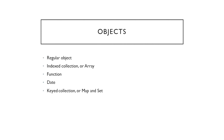In JavaScript, the object has various subtypes but they're still an object under the hood. In this lecture we will be covering only the regular object, index collections or better known as arrays, then the date object and some keyed collections like map and set, but we will only touch them briefly. The function is out of scope for this lecture because you will be covering it in later steps.